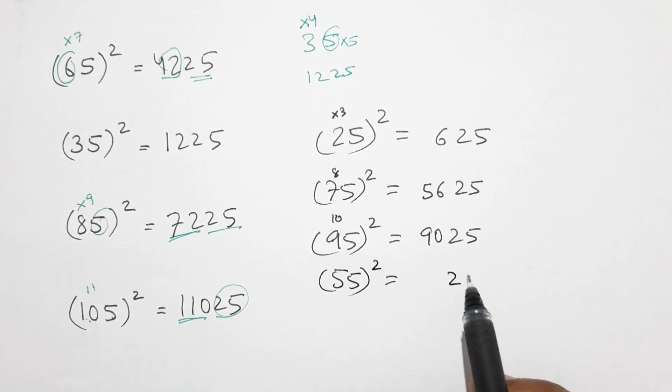So here 5 square is 25 and 1 more than 5 is 6, so 5 times 6 equals 30. So in this way we can calculate the square of any number ending with digit 5 in less than a second.